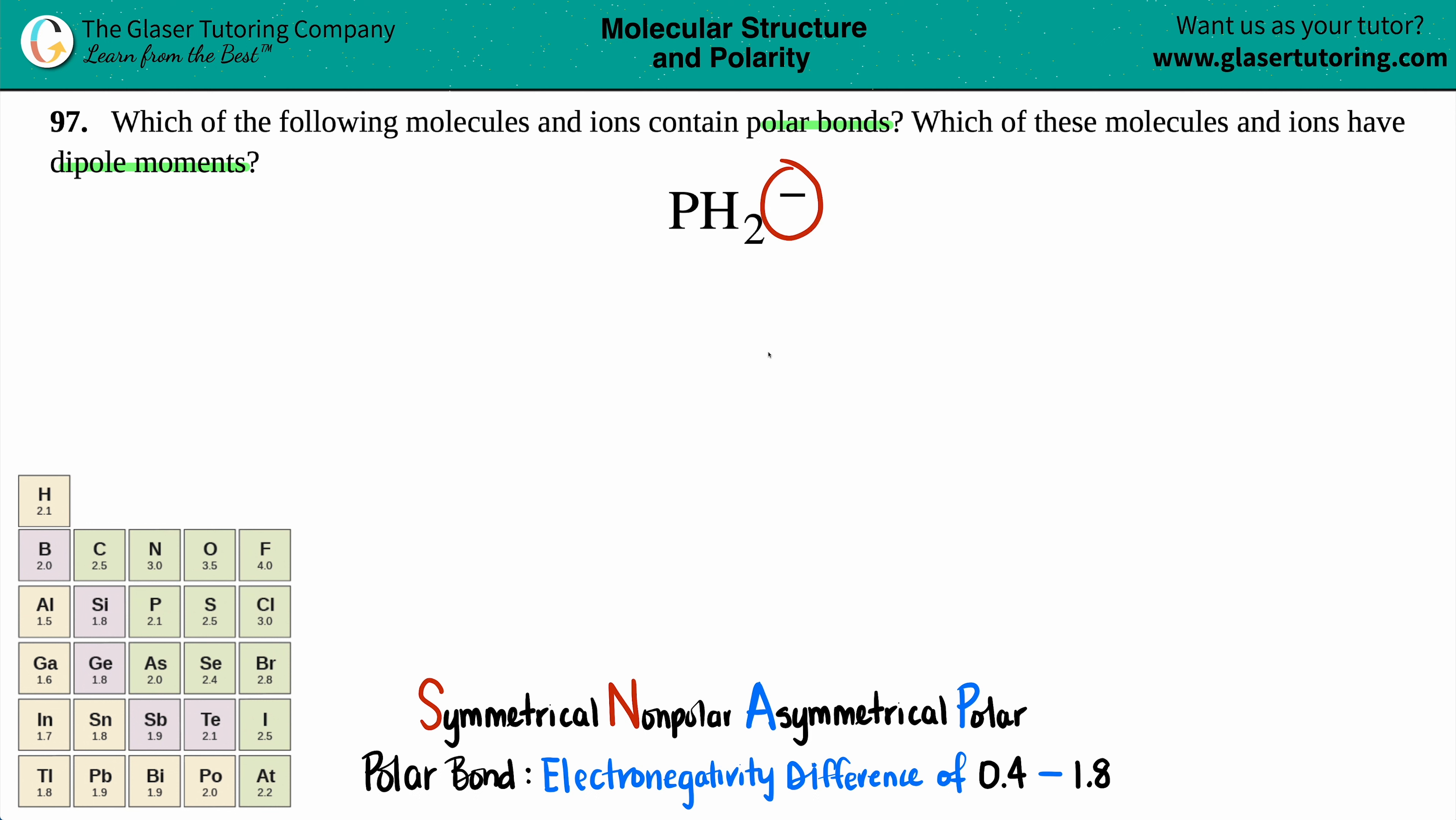I see the negative up top here, so that means we're in ion territory. Molecules are the covalent compounds that don't have a charge. But still, we have to figure out if this ion has polar bonds and if it has a dipole moment.